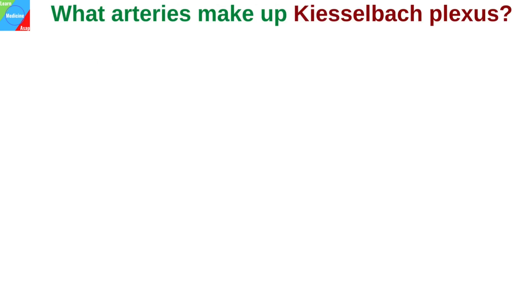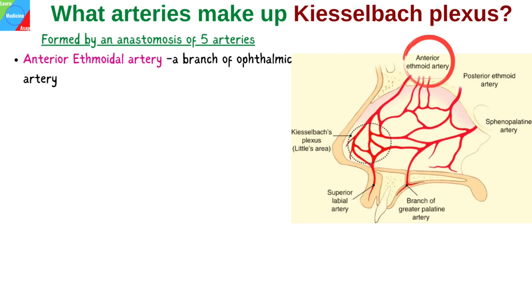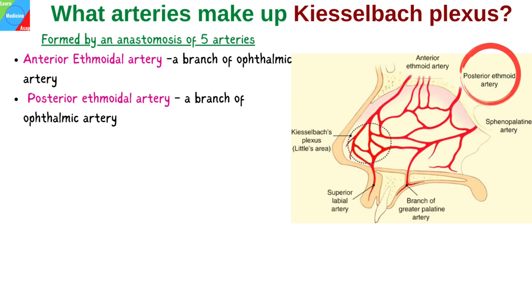What arteries make up the Kieselbach plexus? The Little's area is formed by an anastomosis of five arteries: the anterior ethmoidal artery, which is a branch of the ophthalmic artery, and the posterior ethmoidal artery, which also branches from the ophthalmic artery.